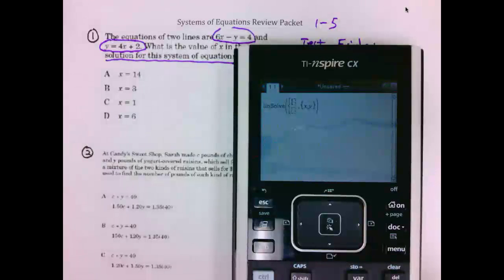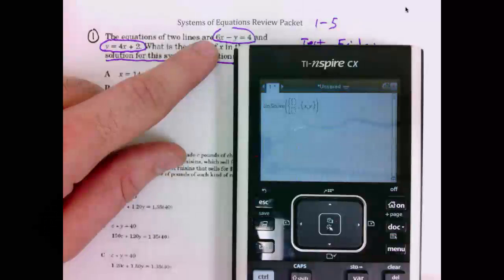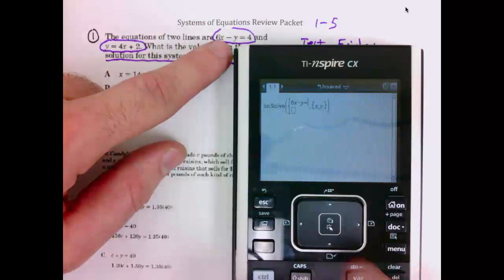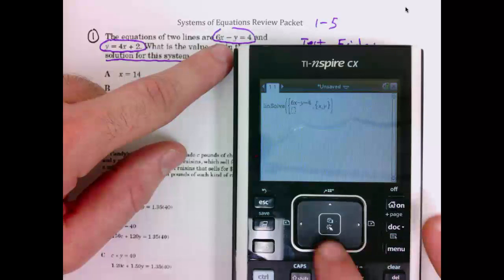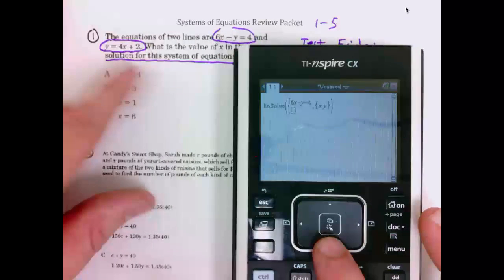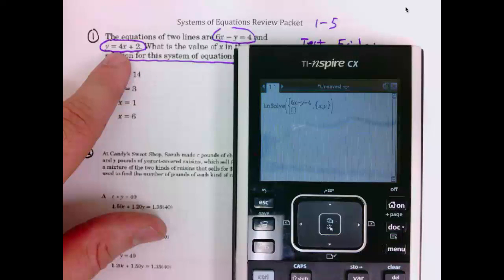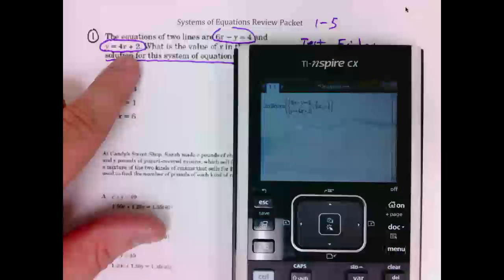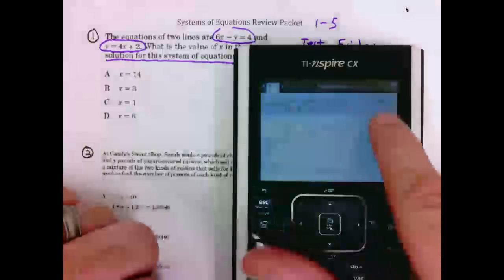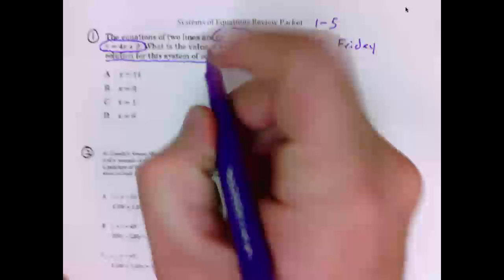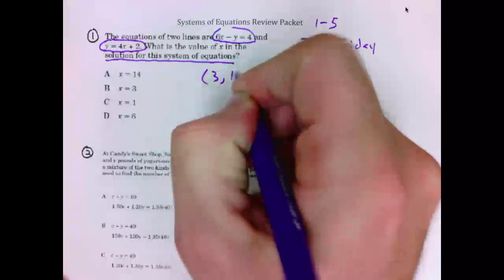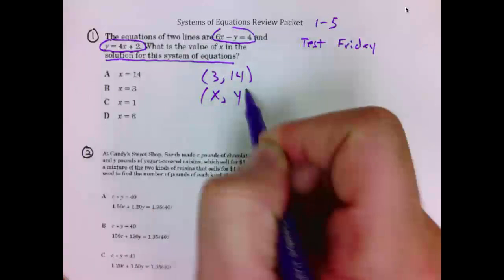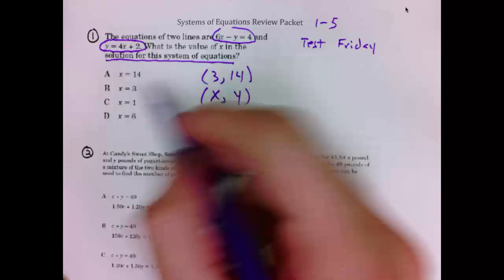Now we are going to enter in our two equations just like we see them. 6x subtract y equals 4. Scroll down. Y equals 4x plus 2. Now we hit enter. It gives us the ordered pair 3, 14. The ordered pair is 3 comma 14, x comma y. Thus we are seeking the x value, x is 3. Number 1 is b.